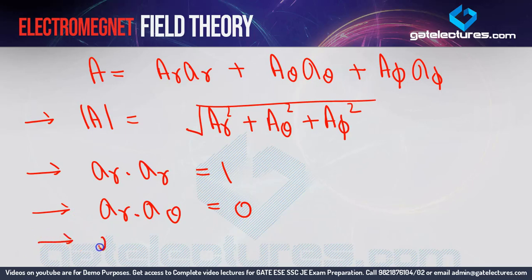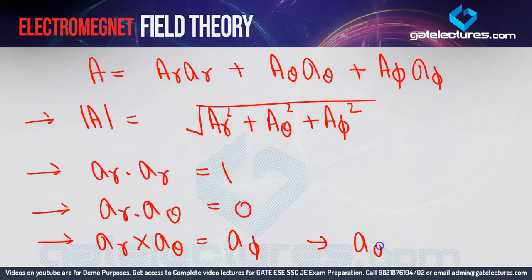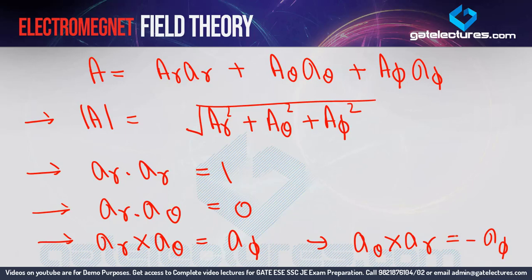For cross products: ar × aθ = aφ (the third one). Similarly, aθ × aφ = ar. And the reverse: aθ × ar = −aφ. All of these we have already studied; I'm just revising them for different coordinate systems.